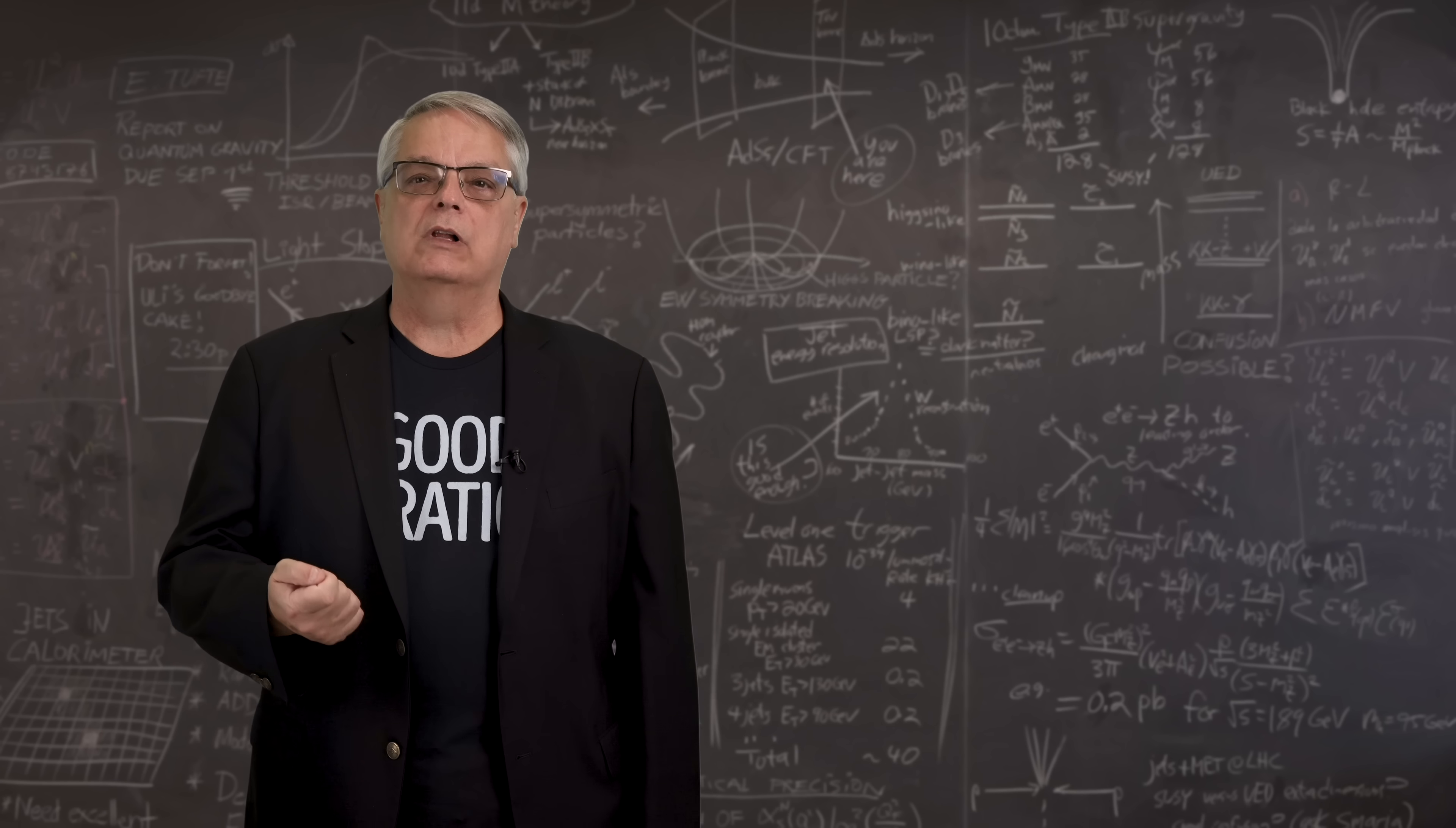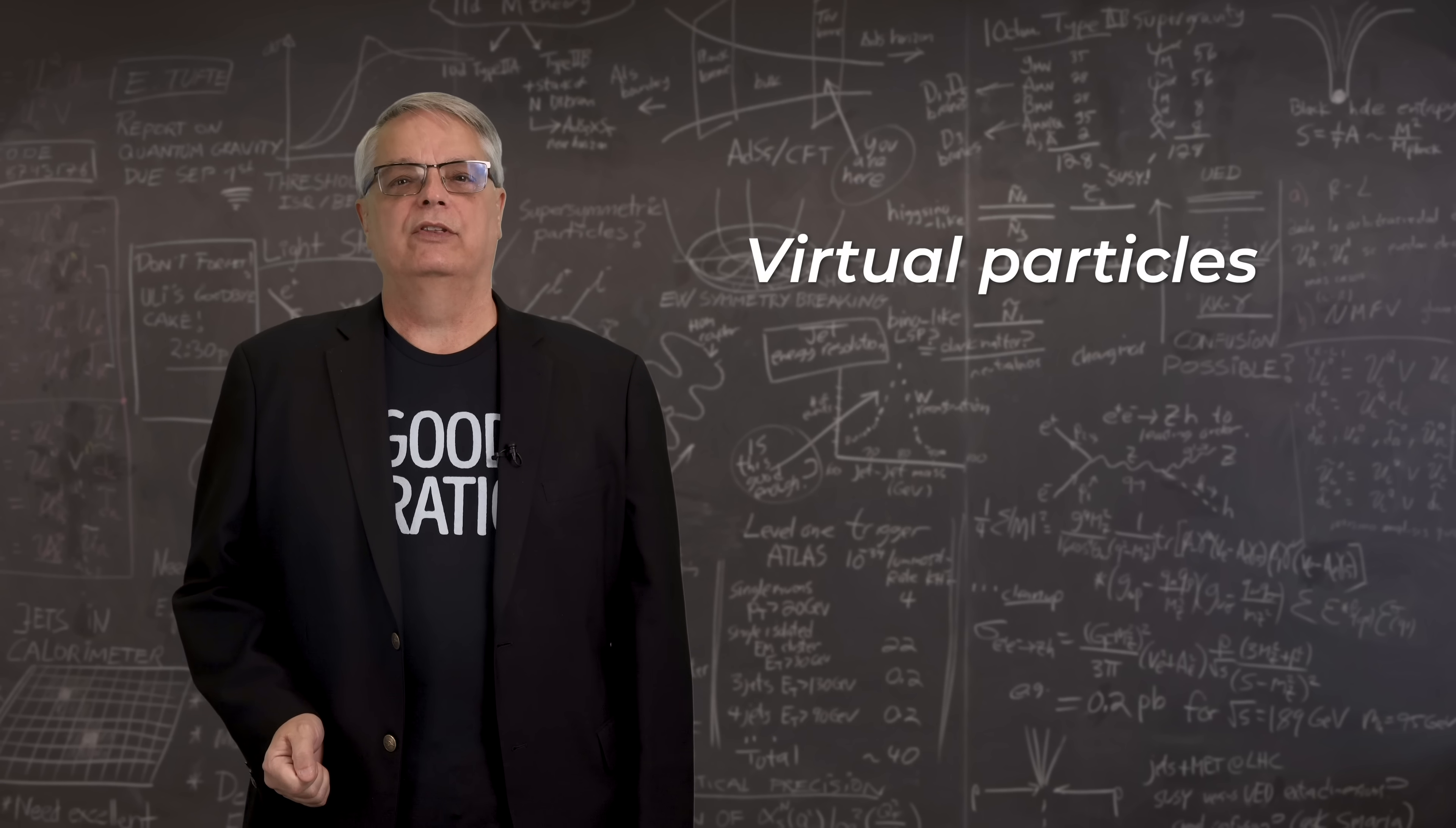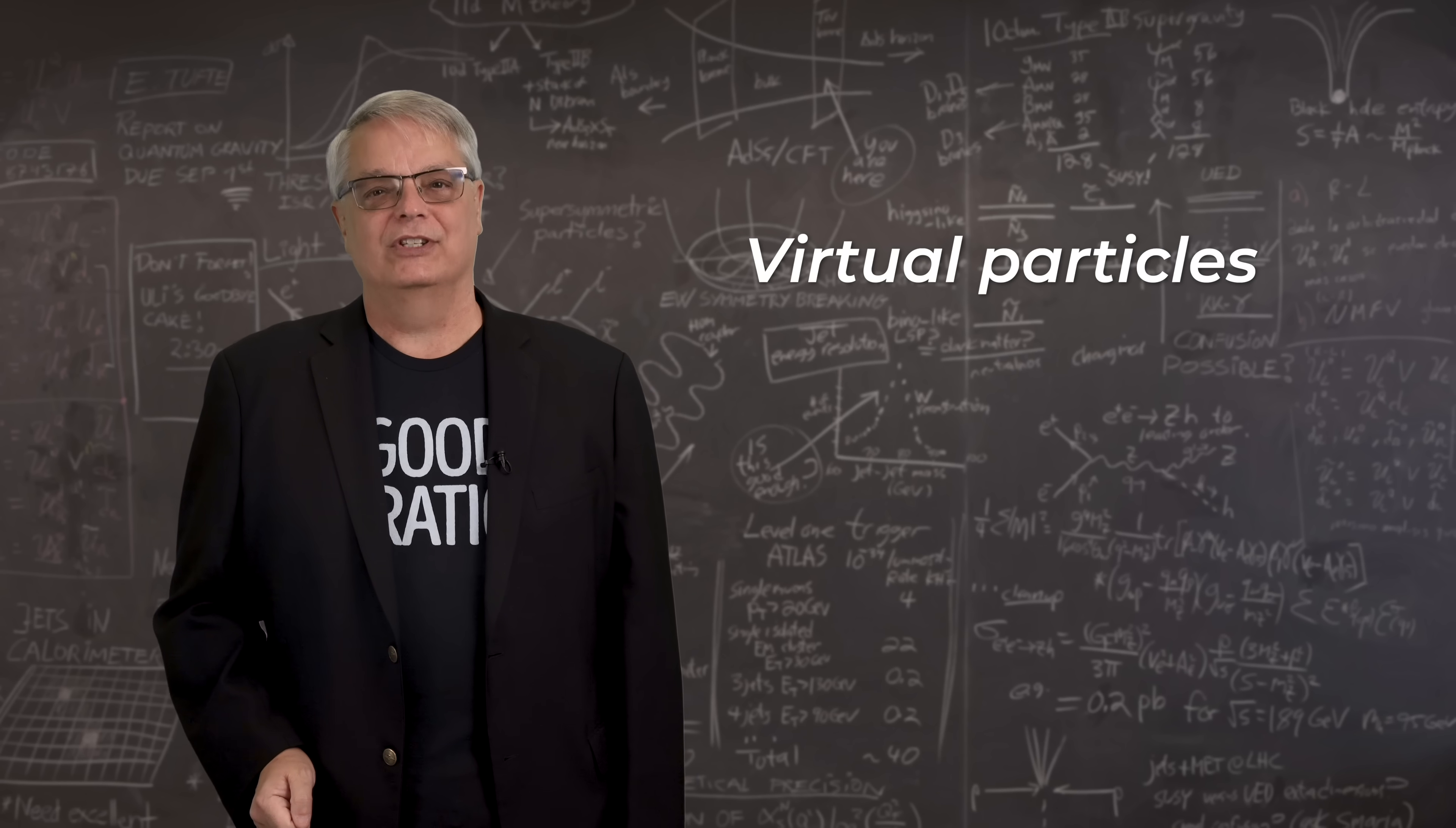These flickering and ephemeral objects are called virtual particles. A lot's been written about them with varying degrees of accuracy. Let's take a deep dive and see how they're viewed by modern physics.